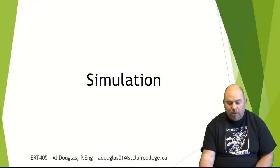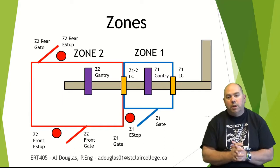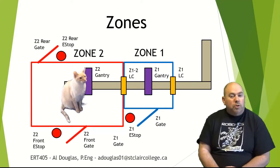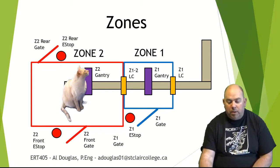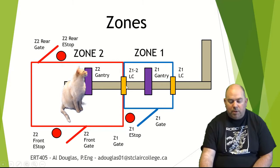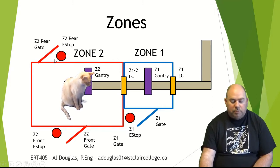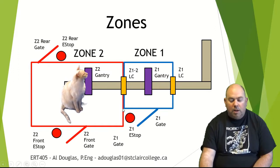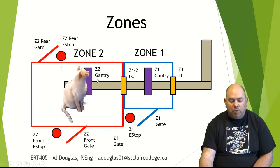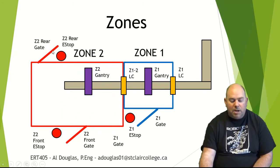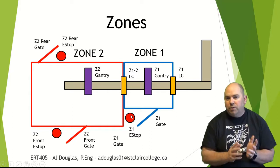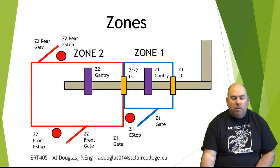This is kind of what our system looks like. We have zone one and zone two. Zone one in blue is made up by these fences, and zone two is over here. We've got a light curtain here and a light curtain here. That's gantry one and gantry two, with a gray conveyor that goes all the way through. We've got a safety gate and an e-stop, another safety gate and e-stop, and a safety gate and e-stop — those are all of our devices.